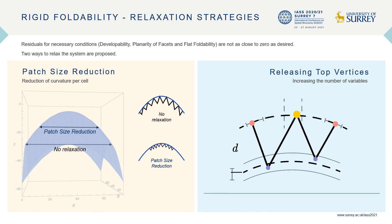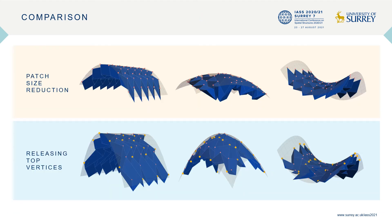The variability is demonstrated here where the yellow vertex is the released vertex. Here, you are looking at solutions obtained using both the relaxation strategies. Unlike the previous solutions, these are flat foldable.